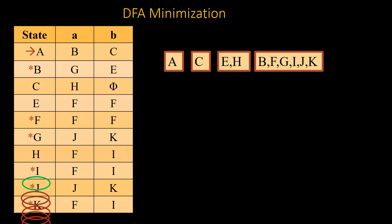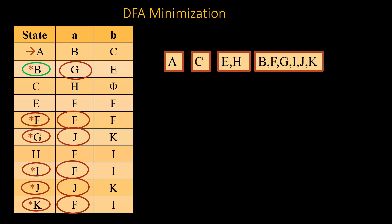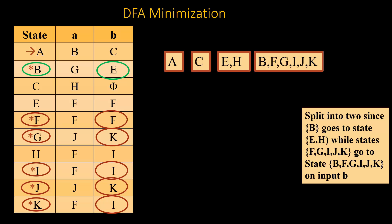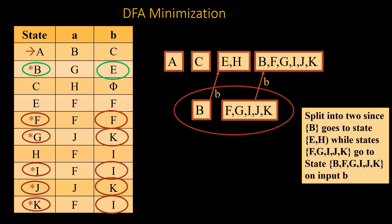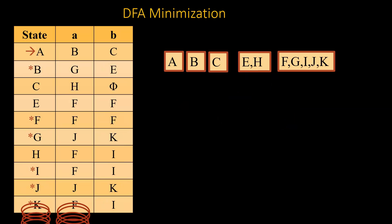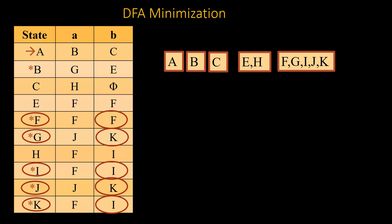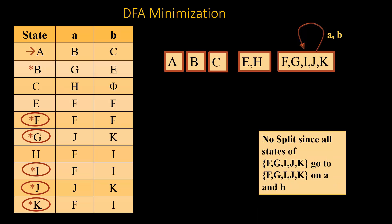Now we check the final states {B, F, G, I, J, K} on input A — all go to the same set, so no split. On input B, we find that B goes to a non-final set (E) whereas all others remain in the final set. So we separate B, leaving {F, G, I, J, K} as one group. We verify {F, G, I, J, K} on both A and B — all states in this group go to the same sets — so F, G, I, J, K can be merged together as a single final state.